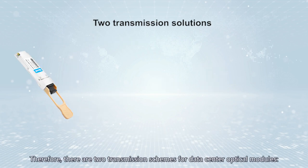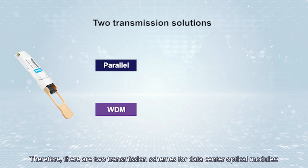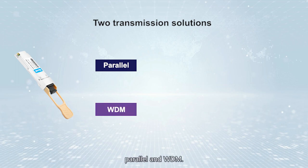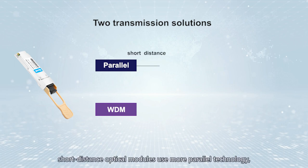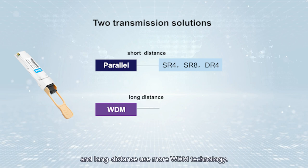Therefore, there are two transmission schemes for data center optical modules: parallel and WDM. In current data centers with 100G and below rates, short-distance optical modules use more parallel technology, and long-distance use more WDM technology.